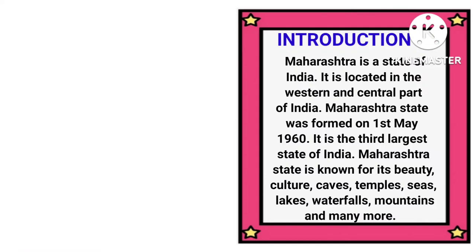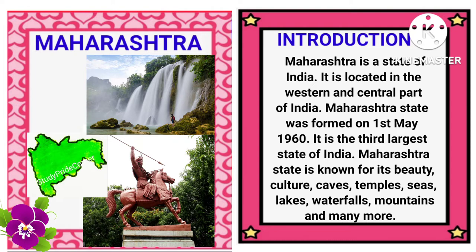Introduction: Maharashtra is a state of India. It is located in the western and central part of India. Maharashtra state was formed on 1st May 1960. It is the third largest state of India. Maharashtra state is known for its beauty, culture, caves, temples, seas, lakes, waterfalls, mountains and many more. And here are some pictures of Maharashtra with map also.